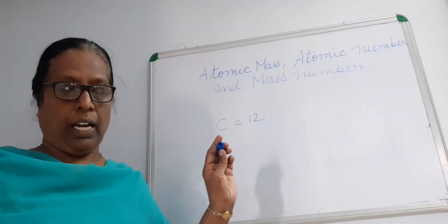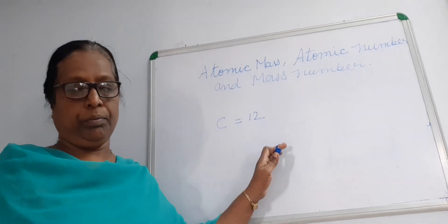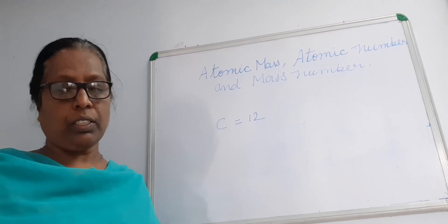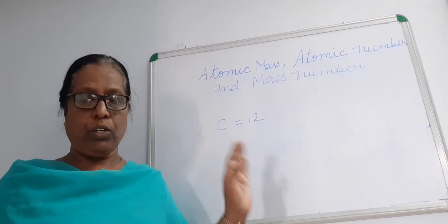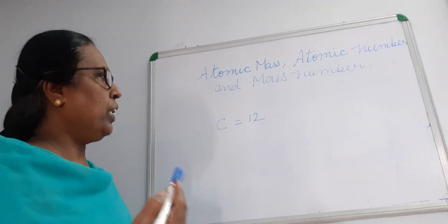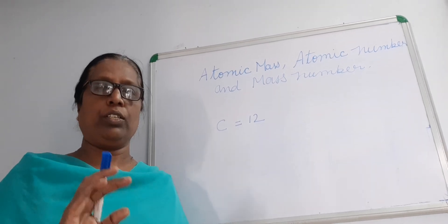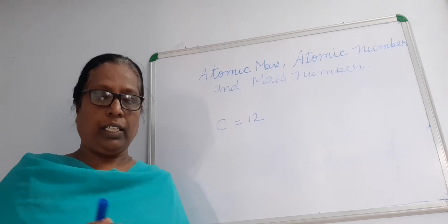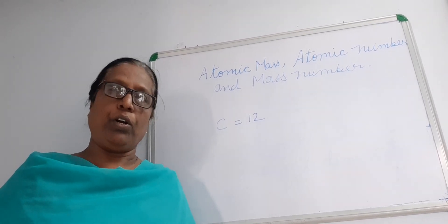What is atomic number? The atomic number of an element is the number of protons in the nucleus of the atom. Any atom you take, the number of protons present in the nucleus tells the atomic number. Thus, atomic number is the number of protons.